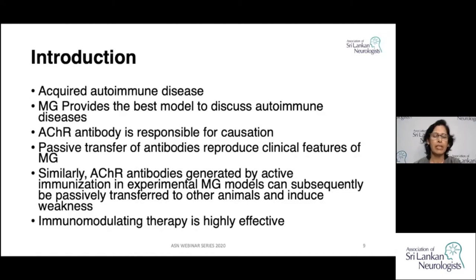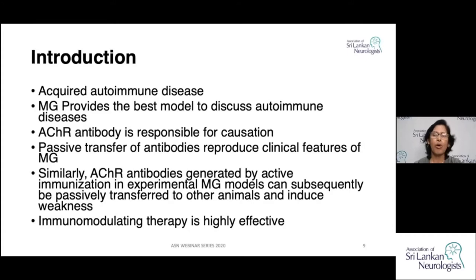It has also been possible to actively immunize with receptors, then passively transfer the developed antibodies to animals to develop clinical models of myasthenia gravis. Furthermore, it has been possible to control all the symptoms of myasthenia gravis with the usual immunosuppressant agents used in day-to-day clinical practice, clearly demonstrating all features of an autoimmune disease.